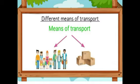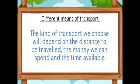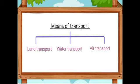Now, different means of transport. Means of transport are what can carry people and goods from one place to another. The kind of transport we choose will depend on the distance to be travelled, the money we can spend, and the time available. There are three types of transport: land transport, water transport, and air transport.